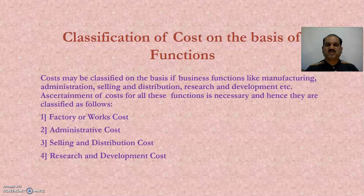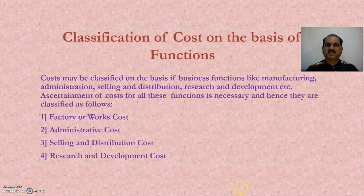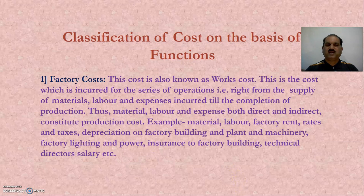Now let's see the classification of costs on the basis of functions. Costs may be classified on the basis of business functions like manufacturing, administration, selling and distribution, research and development, etc. Ascertainment of costs for all these functions is necessary, and hence they are classified as factory costs, administrative costs, selling and distribution costs, and research and development costs.